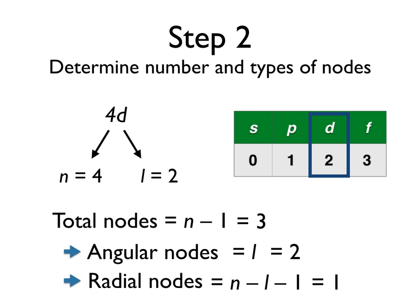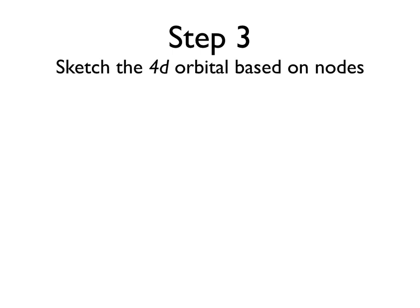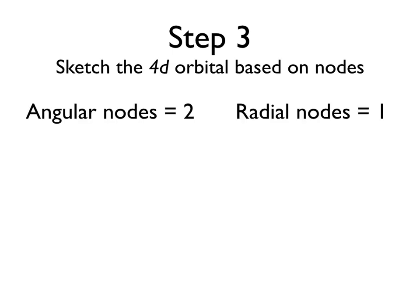So for this orbital, we have two angular nodes and one radial node. Based on that, we can draw a picture. Again, here are the nodes that we're working with.